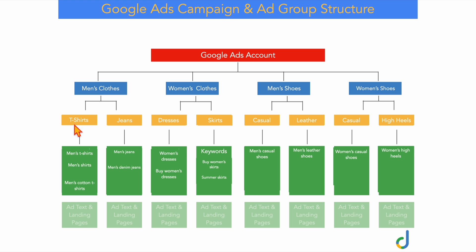The power in this is that by breaking keywords into individual ad groups so that each ad group only has one keyword theme, you can then write your ads and point people to landing pages which are highly specific to the actual initial search. This avoids a situation where someone searching for men's shoes goes directly to your page on your website selling men's shoes, rather than going to the homepage and having to navigate to find the men's casual shoes. That's a quick overview of what your Google Ads structure should look like for your search campaigns.